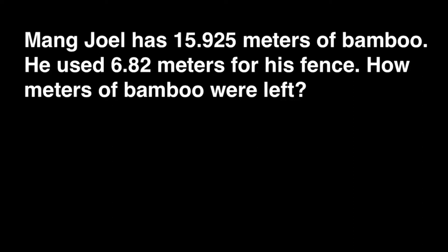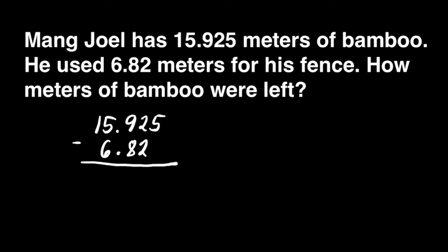Number 1, we have to write down the 2 decimals one under the other, and with the decimal points lined up. So let's do that: 15 and 925 thousandths, and 6 and 82 hundredths. We have to line up our decimal points. Next, we have to add zeros so the numbers have the same length, and it is easy to subtract when we have the same number of digits.